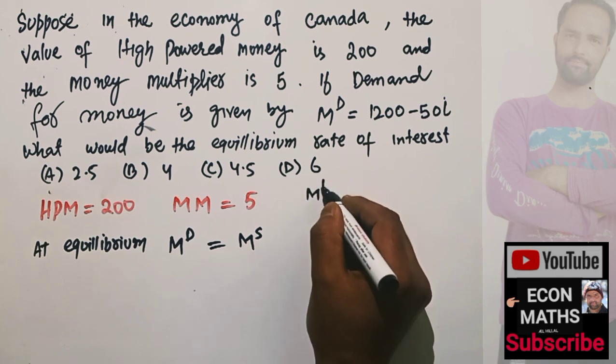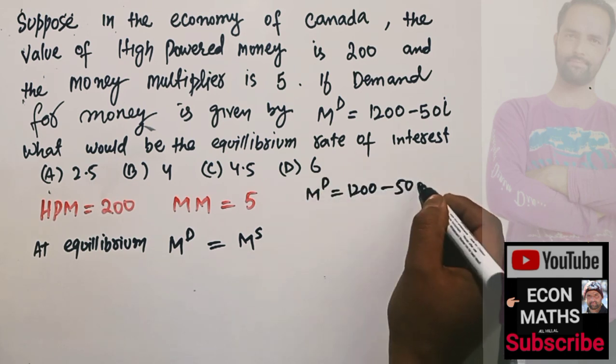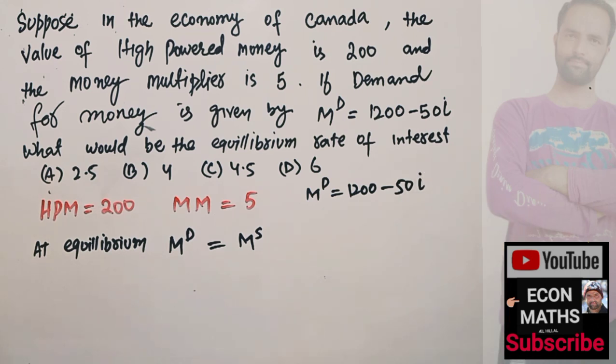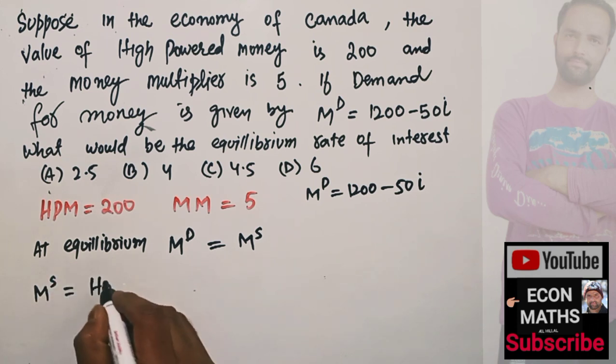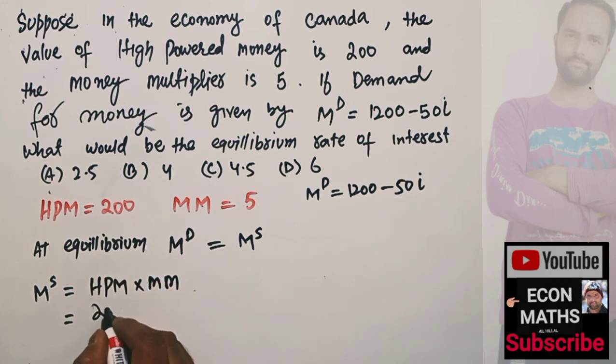First, we need to find the money supply. Money supply is equal to high powered money times the money multiplier: Ms = HPM × MM = 200 × 5 = 1000.